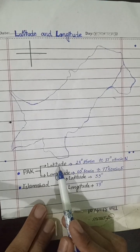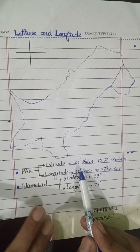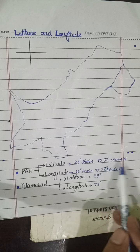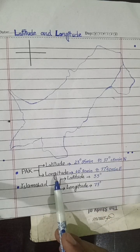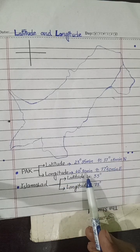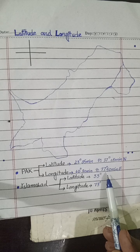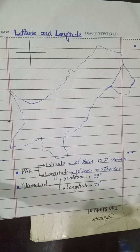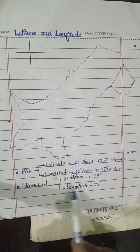The latitude of Pakistan is 23 degrees and 35 minutes to 37 degrees and 5 minutes north, and the longitude of Pakistan is 60 degrees and 50 minutes to 77 degrees and 50 minutes east.